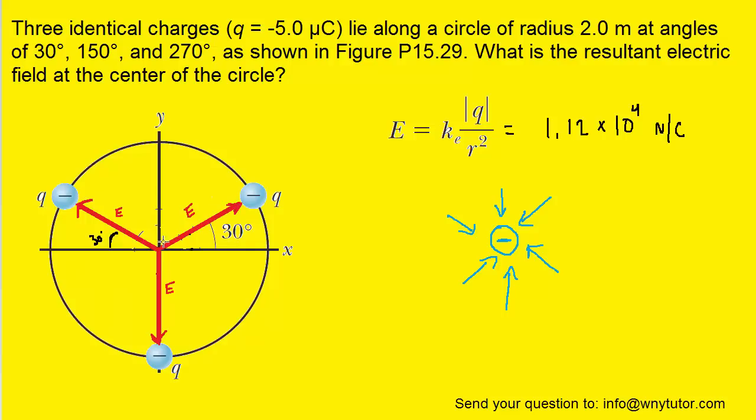So for the electric field that's pointing in this direction we can extend a line in the positive x direction to represent the x component, and then we can also extend a line in the positive y direction to represent the y component. We'll put arrowheads on there to represent those components.